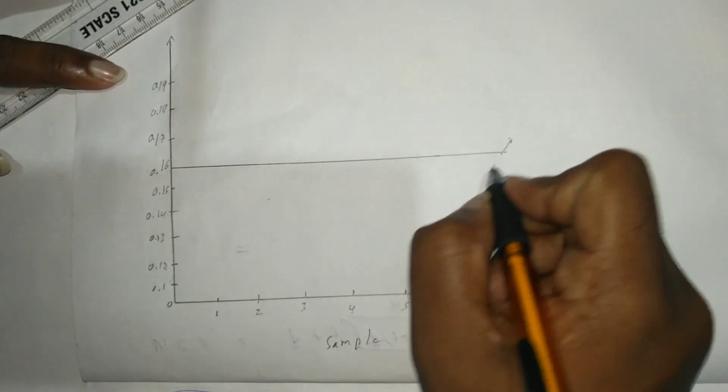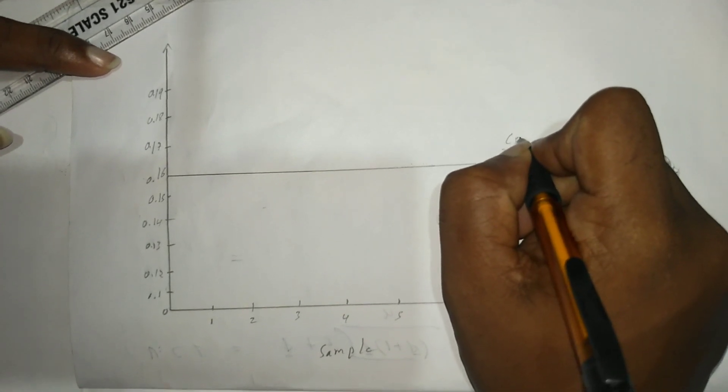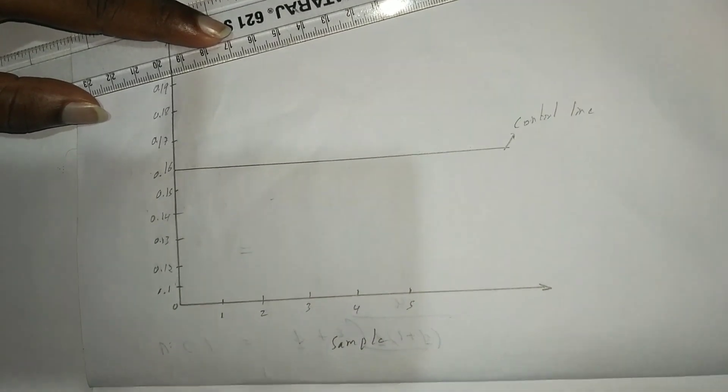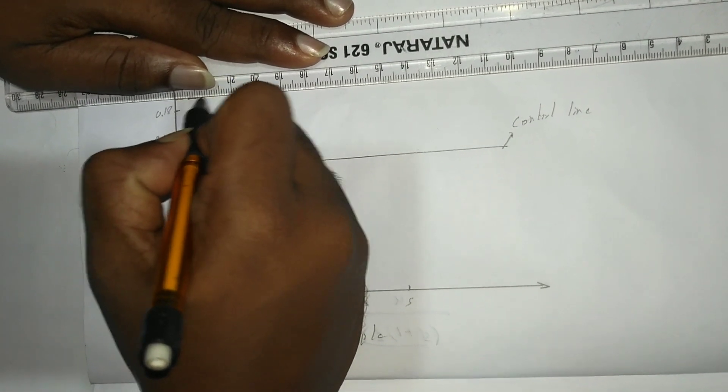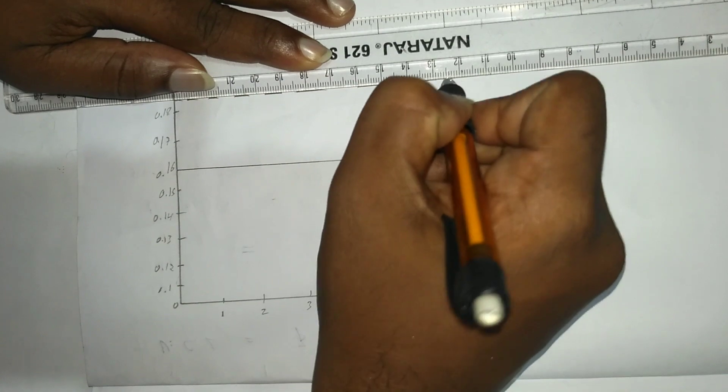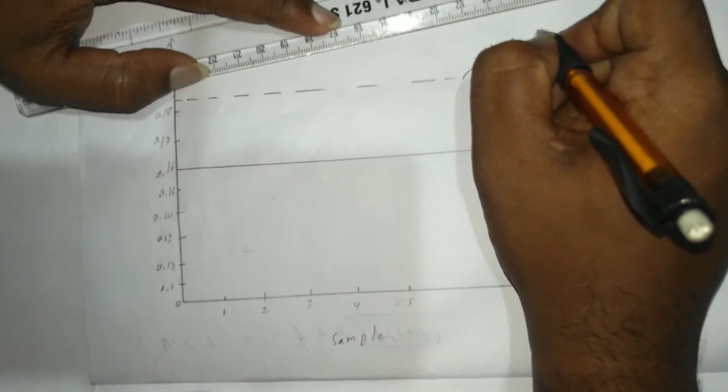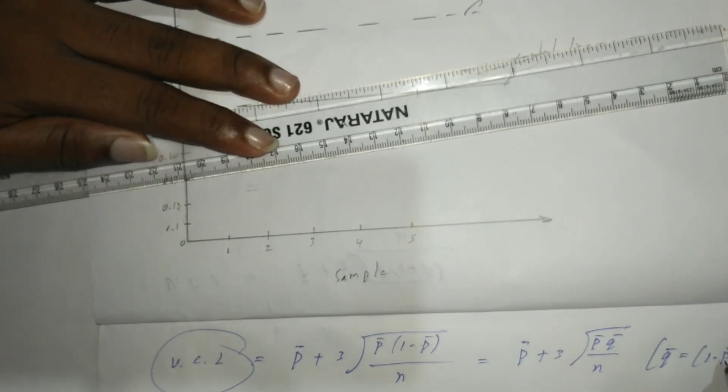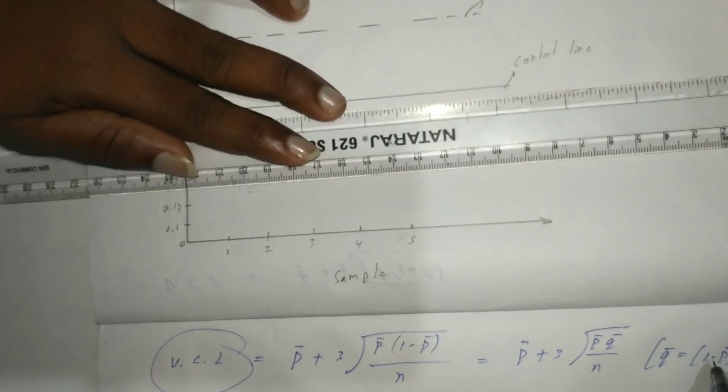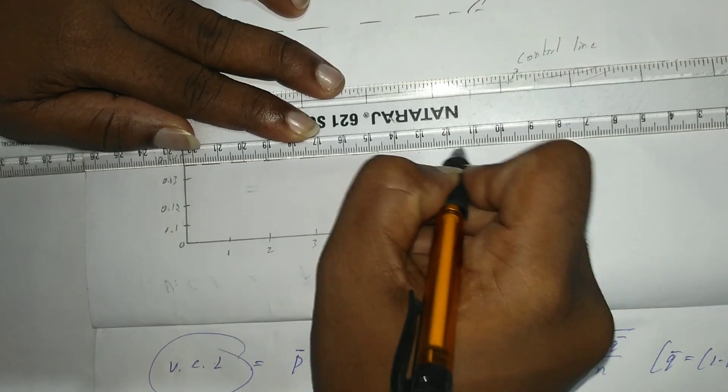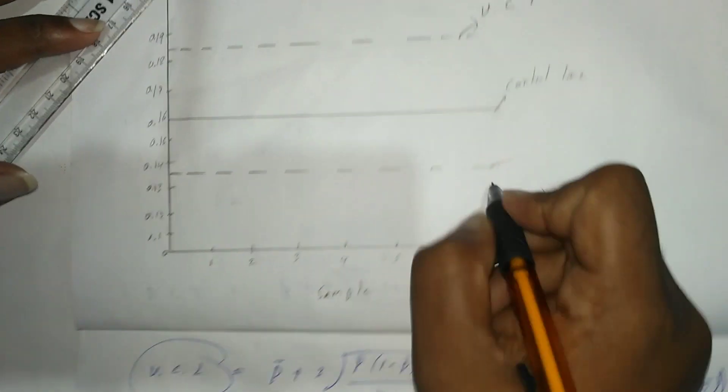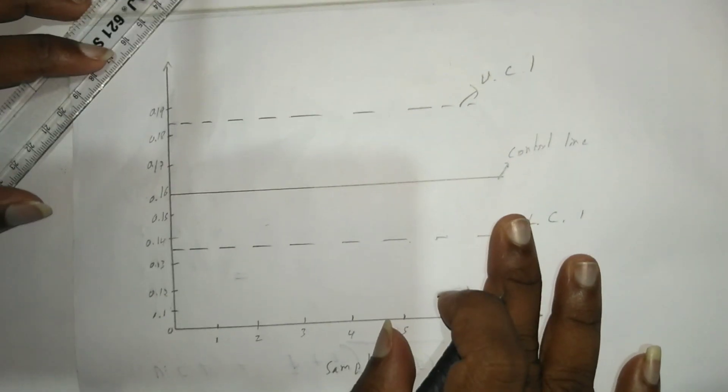Upper control line and lower control line are dotted lines. Our upper control line is 0.1843, drawn as a dotted line. Lower control line is 0.1353, also a dotted line. This is the graph with samples 1, 2, 3, 4, 5, and the y-axis represents pi values.